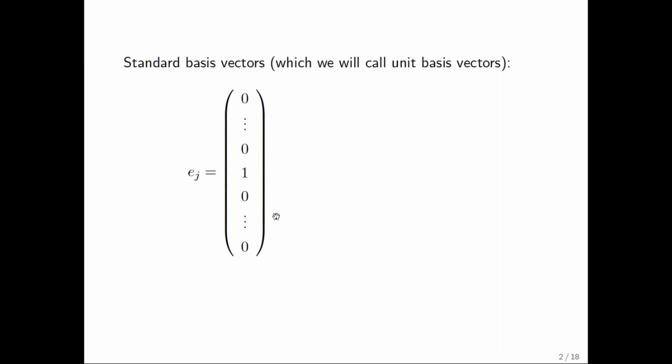Now, in this course, we're going to use the notation e sub j to denote the vector that has that one in the j-th entry. Because we start indexing at zero, that means the vector starts with j zeros, then has a component equal to one, and that's the component indexed by j, and then the remaining entries are also equal to zero.